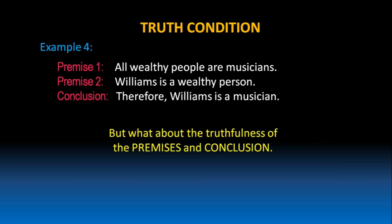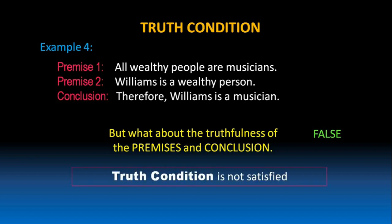But what about the truthfulness of the premises and the conclusion? Premise 1 says all wealthy people are musicians. Is it true in the world in which we are living in? Are all wealthy people musicians? Of course not. Premise 1 is false. Because premise 1 is false, it leads to the wrong conclusion that Williams is a musician just because he is a wealthy person. So, we can say, truth condition in this argument is not satisfied.